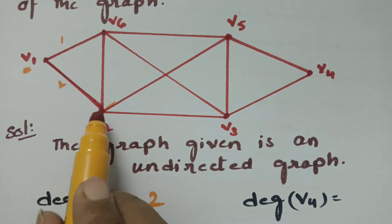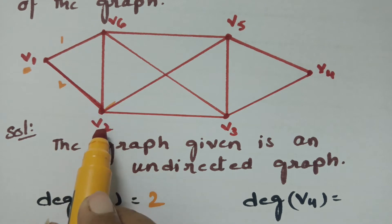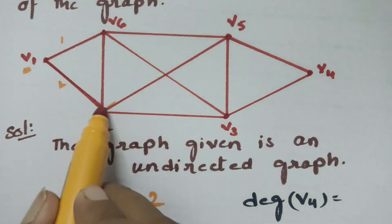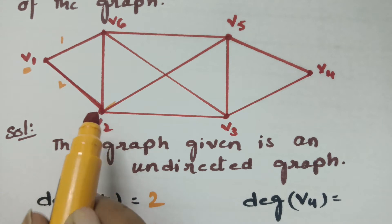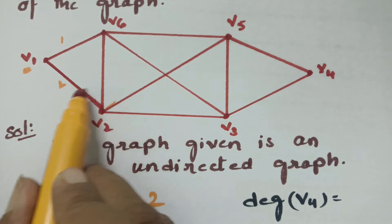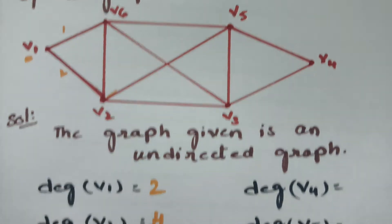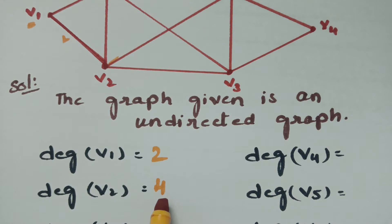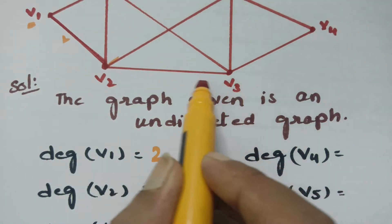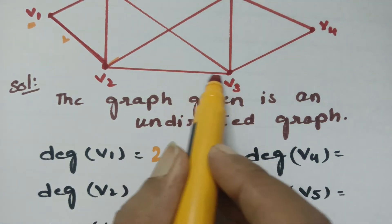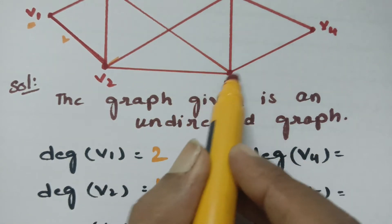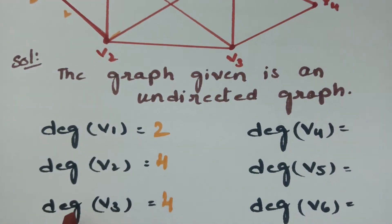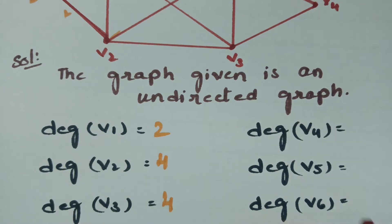Coming to vertex v2, there are 4 edges incident towards v2 — 1, 2, 3, 4 — therefore the degree of v2 is equal to 4. And next coming to v3, there are also 4 edges — 1, 2, 3, 4 — therefore the degree of v3 is equal to 4.